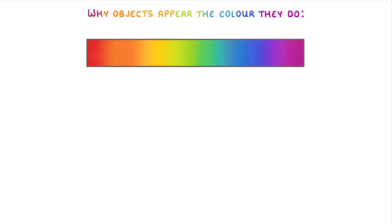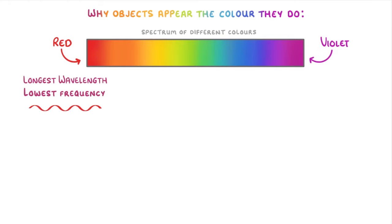The first thing to know is that visible light is made up of a whole spectrum of different colours, from red, which has the longest wavelength but lowest frequency, all the way to violet, which has the shortest wavelength but the highest frequency.